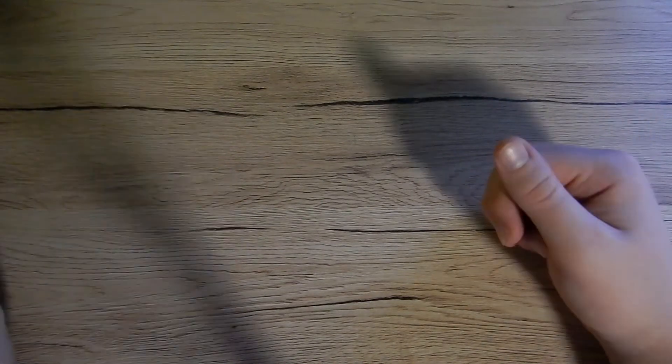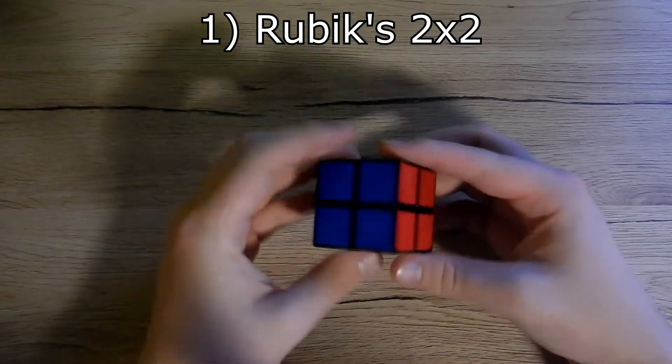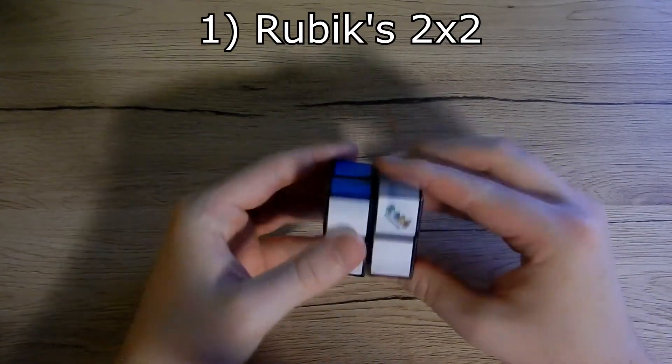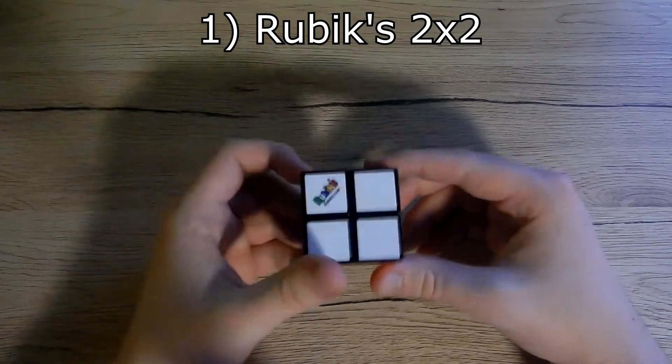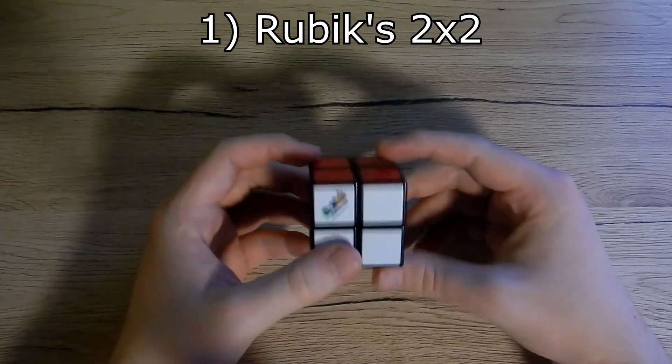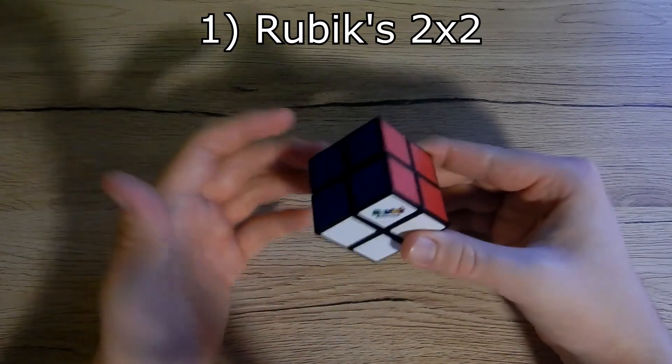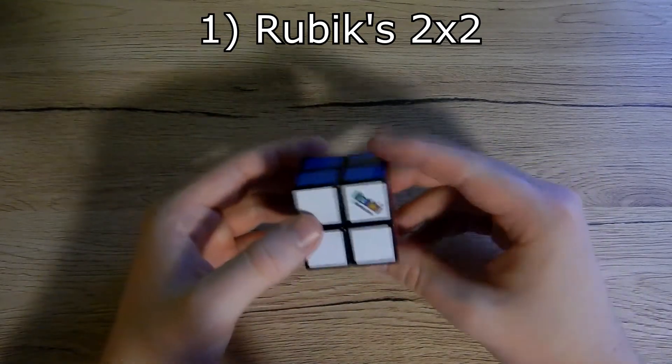Let's start with n by n puzzles. First we have Rubik's 2x2. Originally it was my brother's 2x2, but he gave it to me because he couldn't solve it. It's the first 2x2 I ever had.